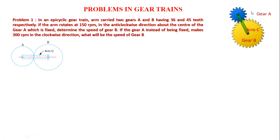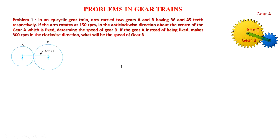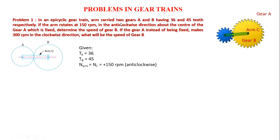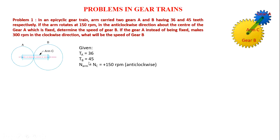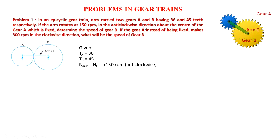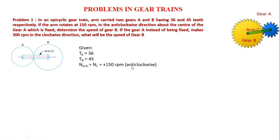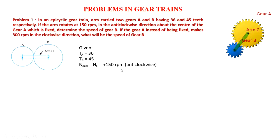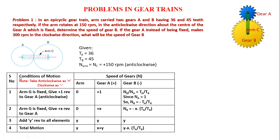Gear A rotates at 300 RPM and we need to determine the speed of gear B. As usual, we need to make a tabular column. Write down the given data: number of teeth on A is 36, number of teeth on B (TB) is 45, and the arm rotates at 150 RPM in the anticlockwise direction, so NC equals 150 RPM. We take plus symbol for anticlockwise direction and minus symbol for clockwise direction.